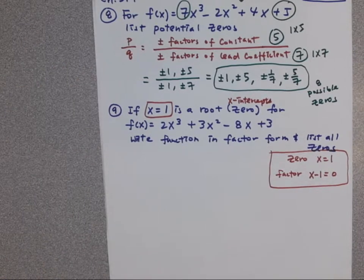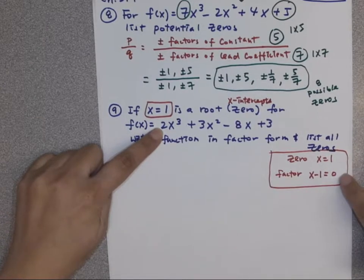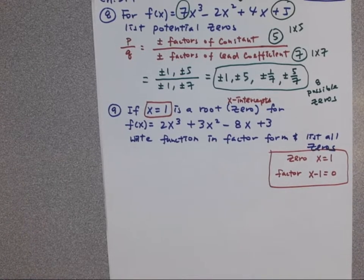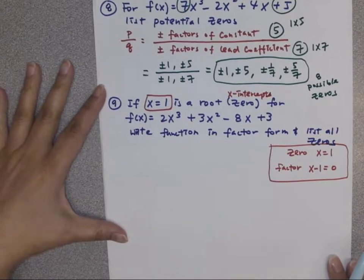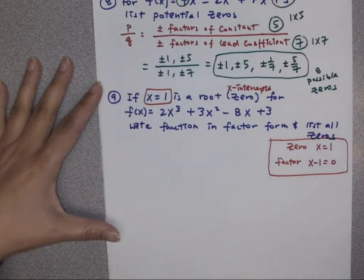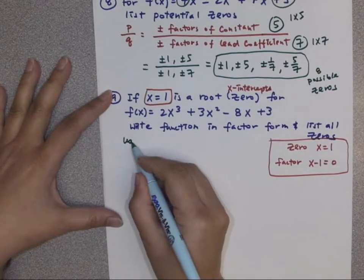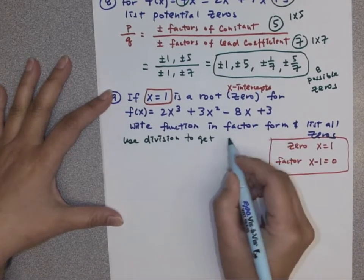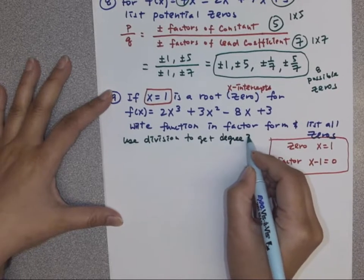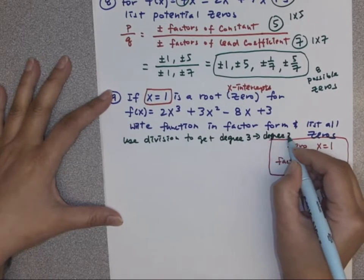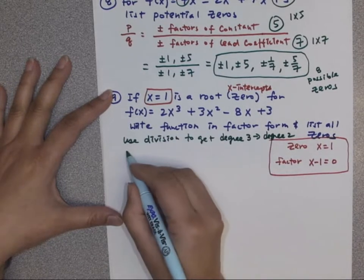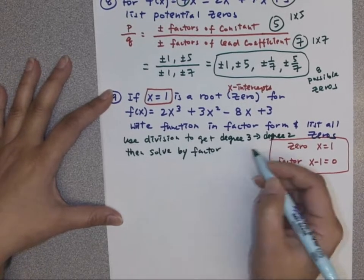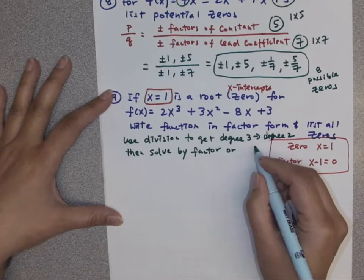So we need to think, we have a degree 3 here. If I know one of the factors or one of the zeros, how can I move it down to become a degree 2 function? And then from degree 2, we can factor or do quadratic formula. So the strategy is, hopefully you know, we're going to need to use divisions to get a degree 3 to a degree 2. And once you have a degree 2, then you can solve it by either factoring, if it can be factored, or quadratic formula, if you need to plug it in.